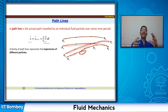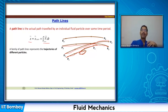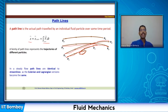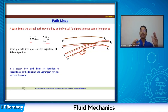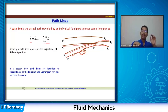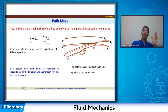The family of path lines represents the trajectories of different particles. In a steady flow, path lines are identical to streamlines, because flow properties are not changing, so particles keep moving in the same path without change in time. Path lines can intersect each other, and a path line can form a loop and cross its own path once or several times depending on the motion.